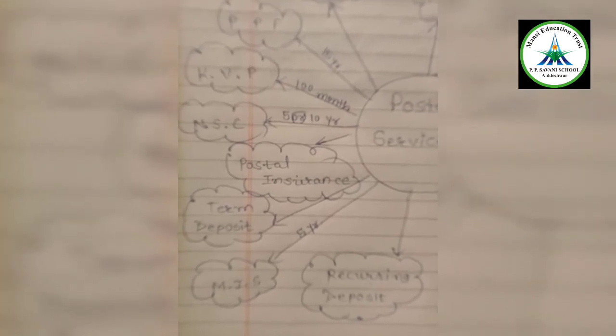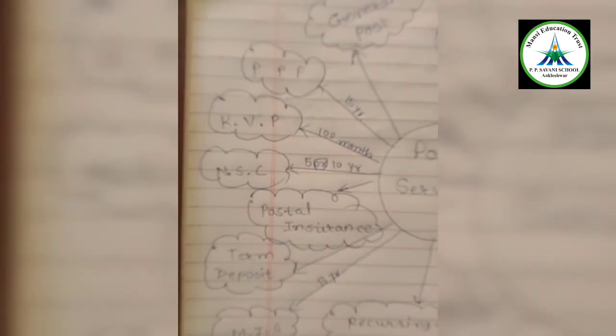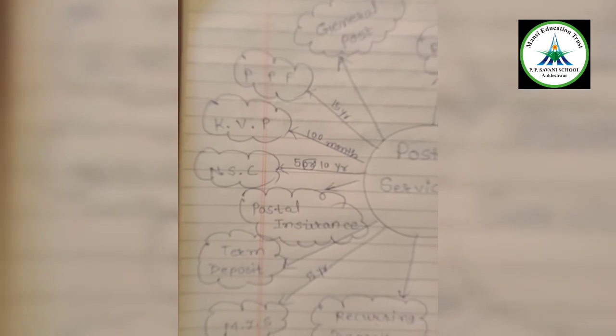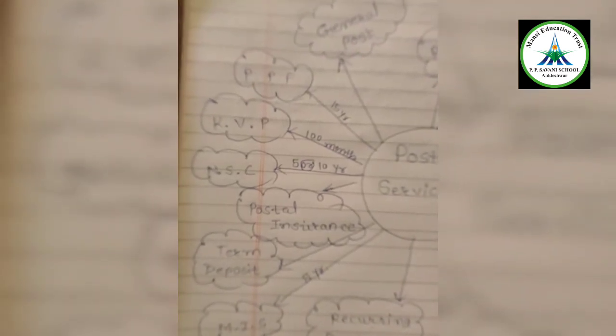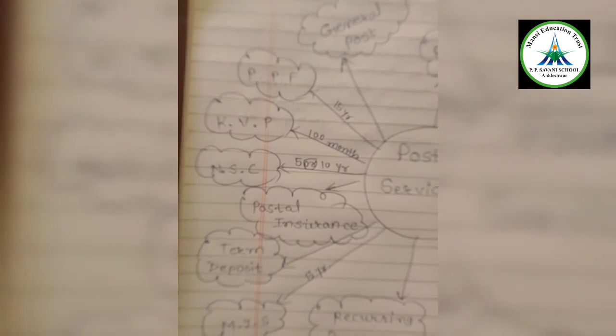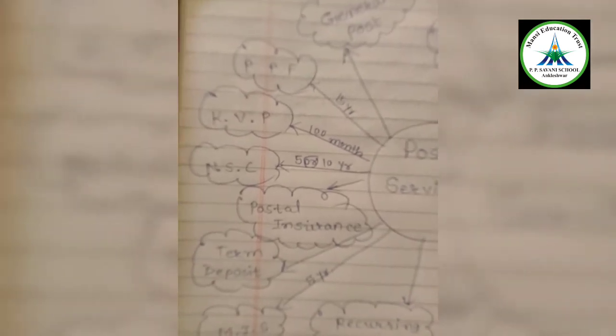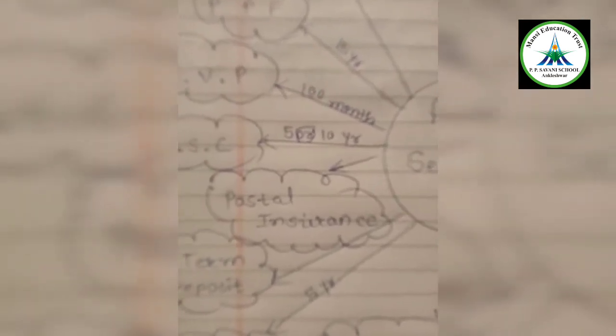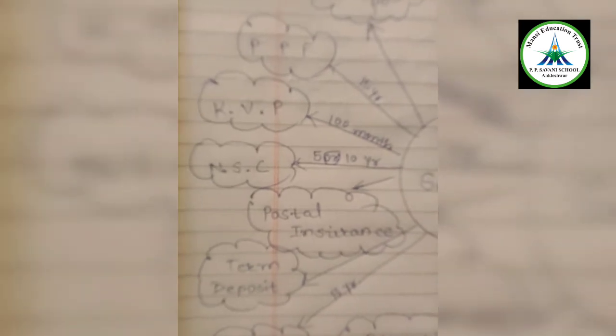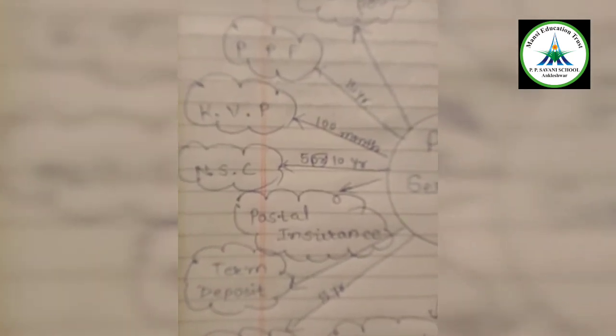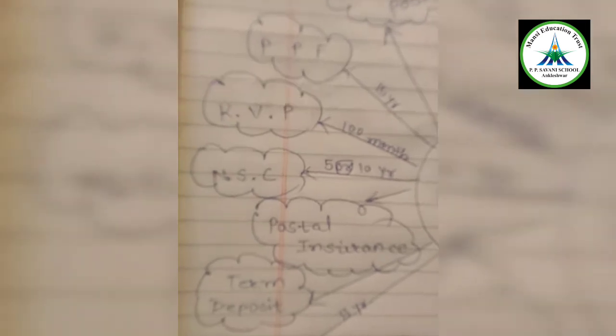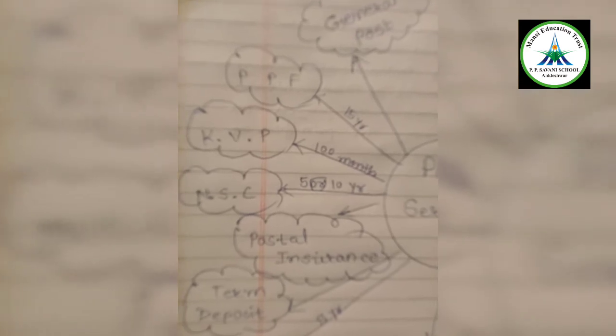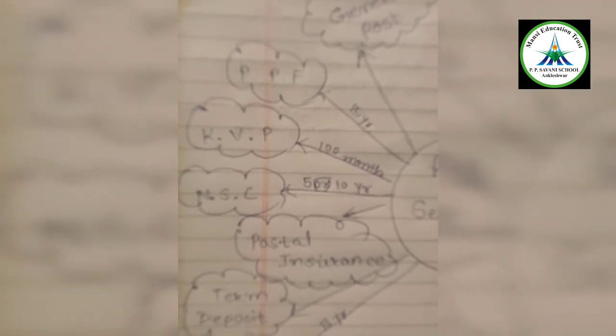Next is Kisan Vikas Patra. The Kisan Vikas Patra gets double investment after 100 months or you can say eight years and four months. So persons who are investing in KVP, after maturity they will get double of whatever they had invested. The amount is decided priorly and after the maturity it can be claimed by fulfilling the formalities.